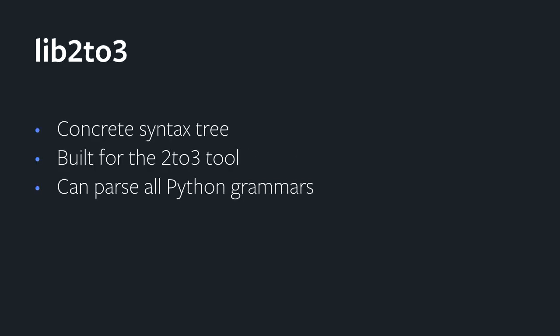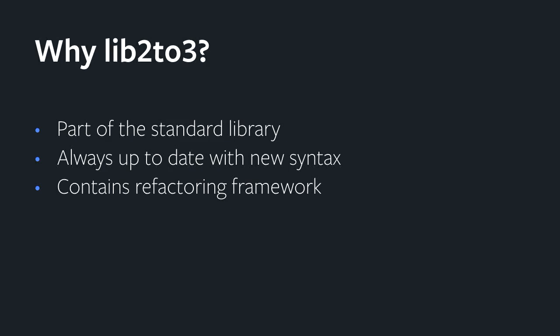The standard library actually contains an implementation of concrete syntax trees called lib2to3. It was originally built for the 2-to-3 conversion code for moving code from Python 2 to Python 3. The benefit is that it can parse all Python grammars from Python 2 or Python 3. The reason to use this rather than some of the alternatives is that because it's part of the standard library, it's going to be well maintained and supported as new versions come out. When new elements of the grammar get added to the language, lib2to3 is immediately updated to support this, so you can be ready for new Python versions immediately rather than waiting for a library to make its own updates.